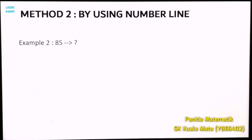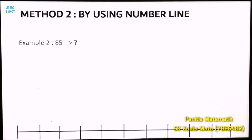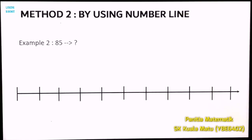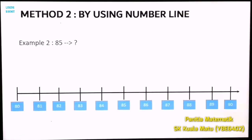Now let's round off number 85 to the nearest ten. Draw the number line and fill in the numbers 80 up to 90, as we want to round off number 85 to the nearest ten. Find number 85 and circle it.